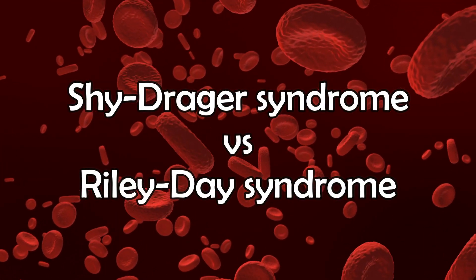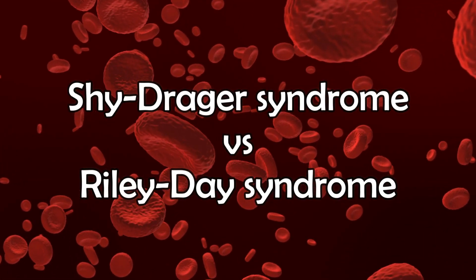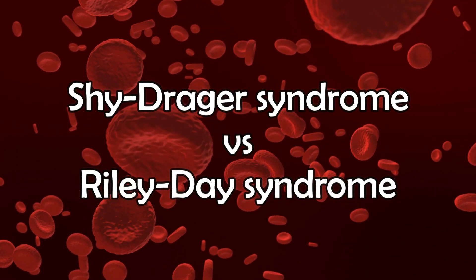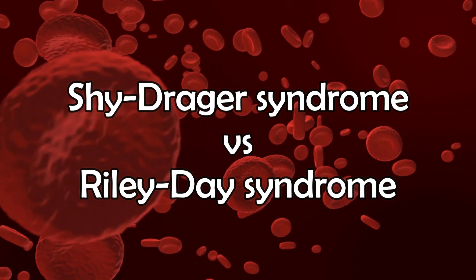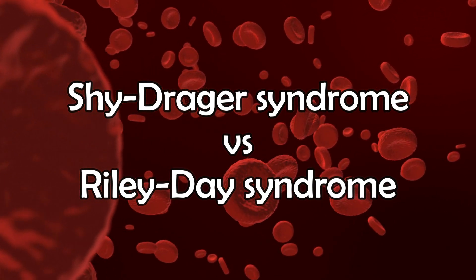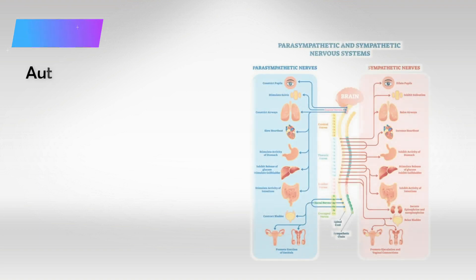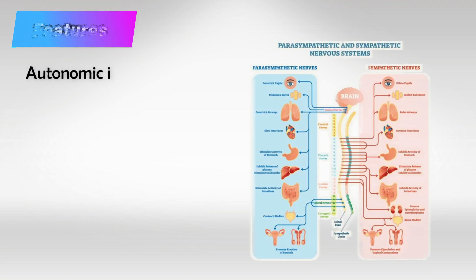Welcome back. In this video, we'll talk about Shy-Drager syndrome and Riley-Day syndrome. Both of these syndromes cause autonomic dysfunction — basically, a disruption of the delicate harmony between the sympathetic and parasympathetic system.